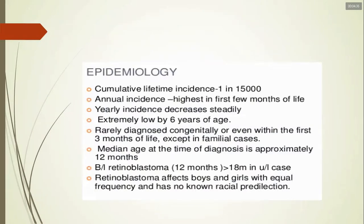The cumulative lifetime incidence is 1 in 1,500 (figures vary by book). Annual incidence is highest in the first few months of life and decreases thereafter, becoming extremely low by six years of age. It is rarely diagnosed congenitally or within the first three months of life.